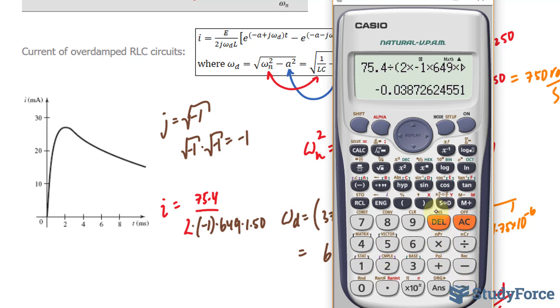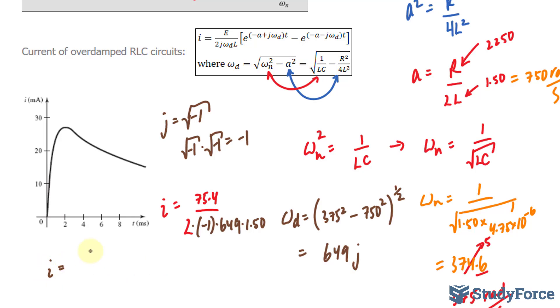This gives us a very small number, negative 0.0387. So, I have i is equal to negative 0.0387. I still have all of this left.